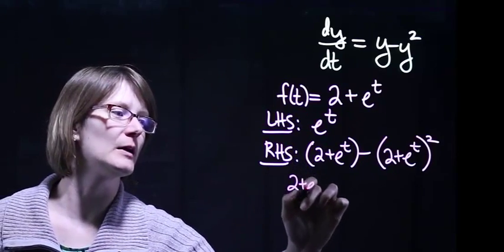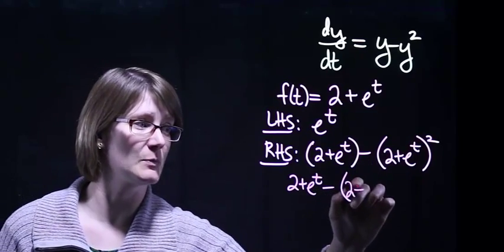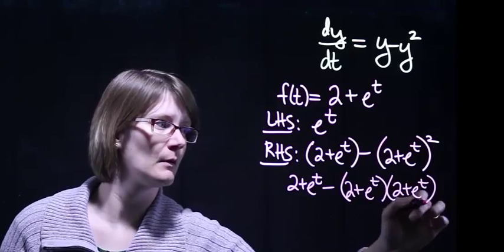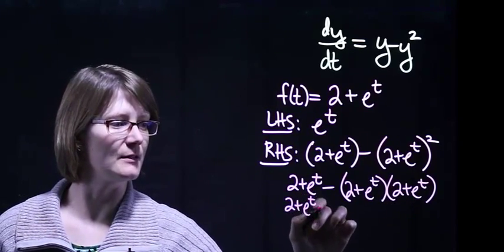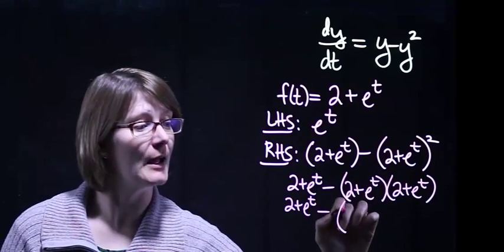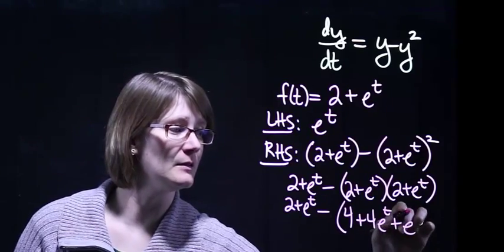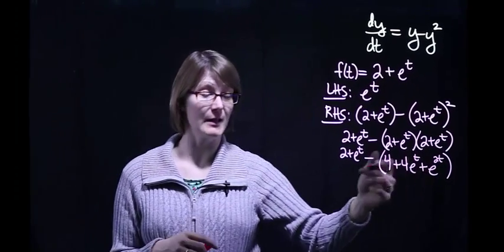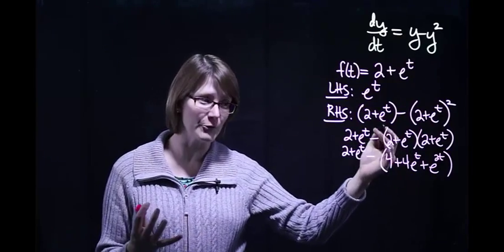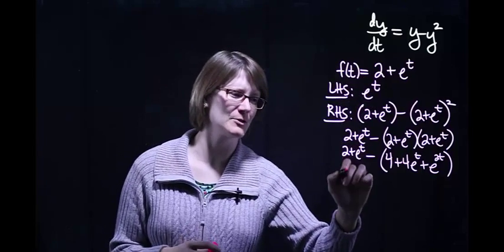So we've got 2 plus e to the t, and then minus (2 plus e to the t) squared means multiply it by itself. That gives us 2 plus e to the t in the front, minus — multiplying it all out — 4 plus 4e to the t plus e to the 2t. This is all properties of exponents and algebra. Hopefully you can see there's no way we're going to end up where we started, but let's go one more step.